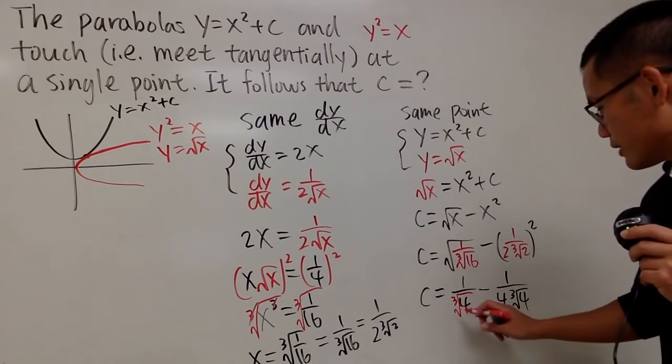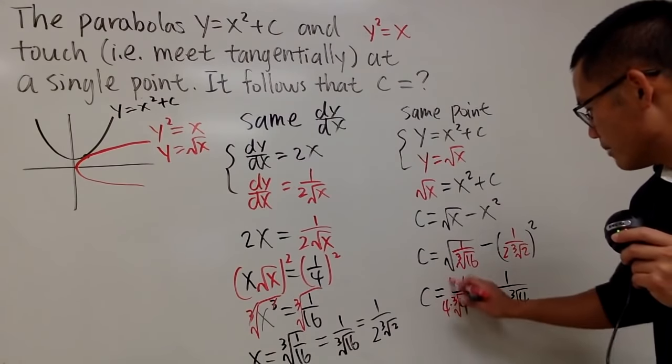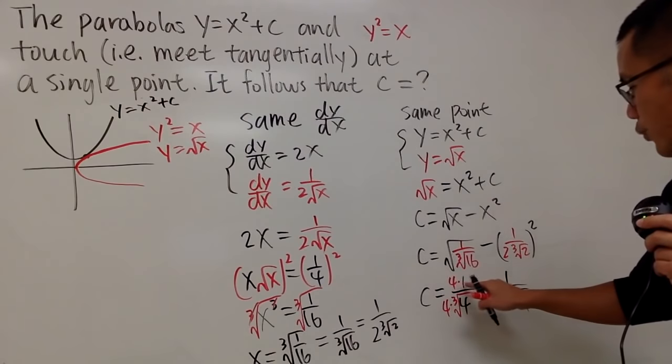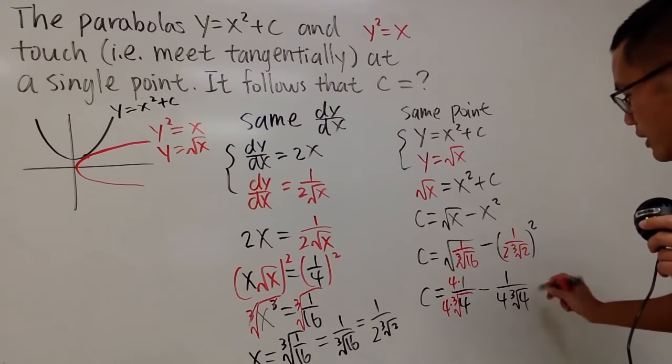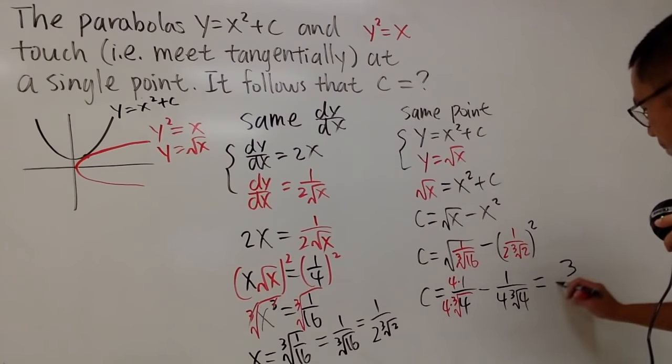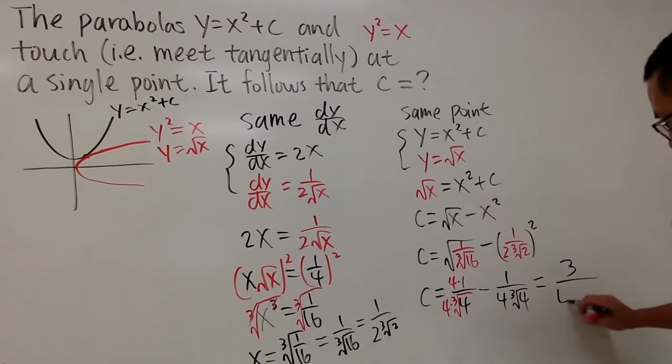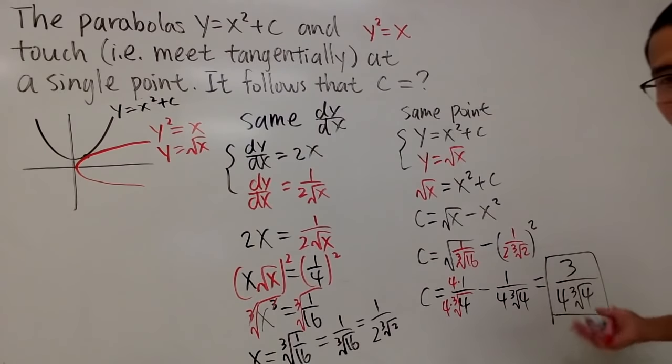Now, as you can see, they are almost the same on the bottom. I just have to multiply this by 4. And of course, this is 4 times 1 is 4, minus 1 is 3. So, all in all, I have 3 on the top, over the denominator is 4 cube root of 4. And this is the c value.